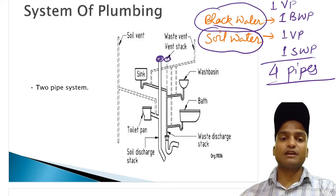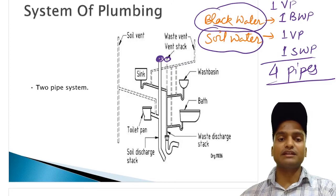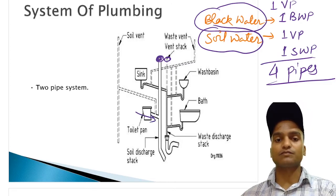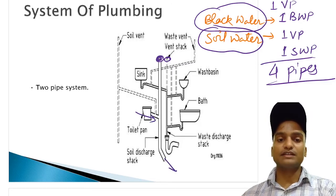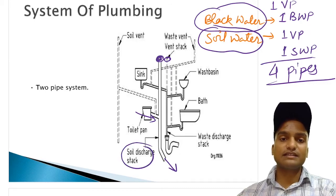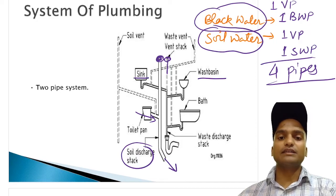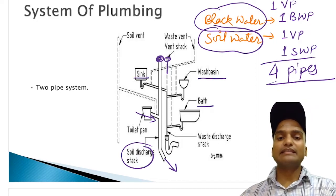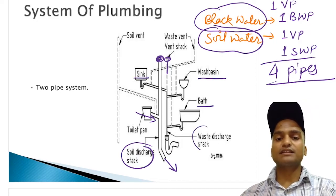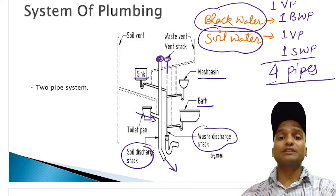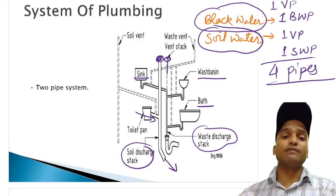This is one discharge pipe and this is another discharge pipe. This discharge pipe is receiving mainly discharges from the toilets. This is soil discharge stack. Whereas, this discharge pipe is receiving discharges from the wash basin, sink and the bath tubs. And this is called waste discharge stack.